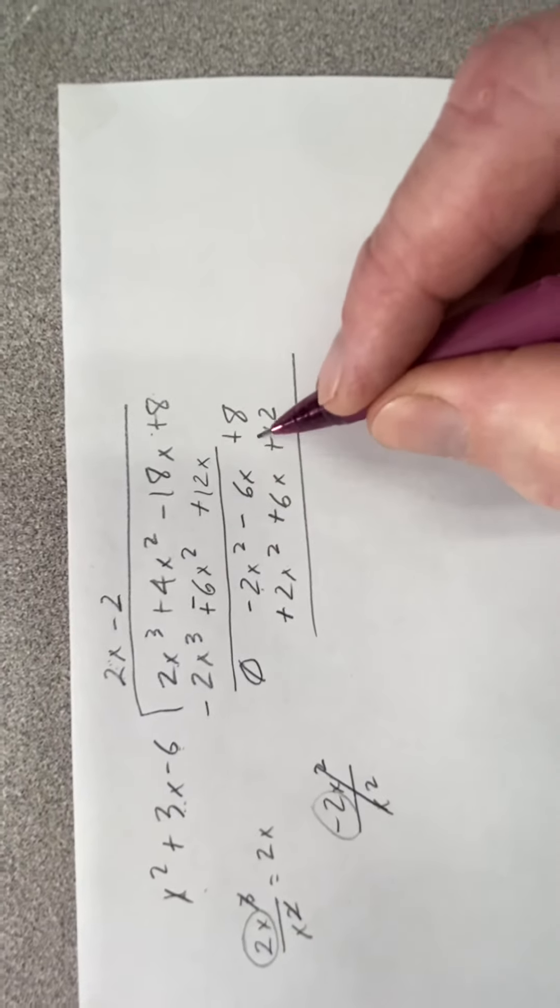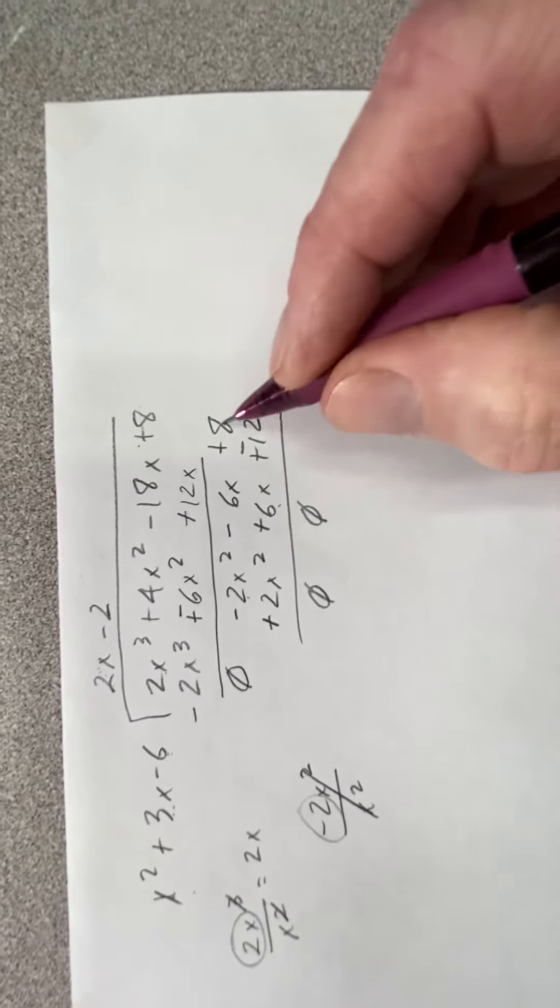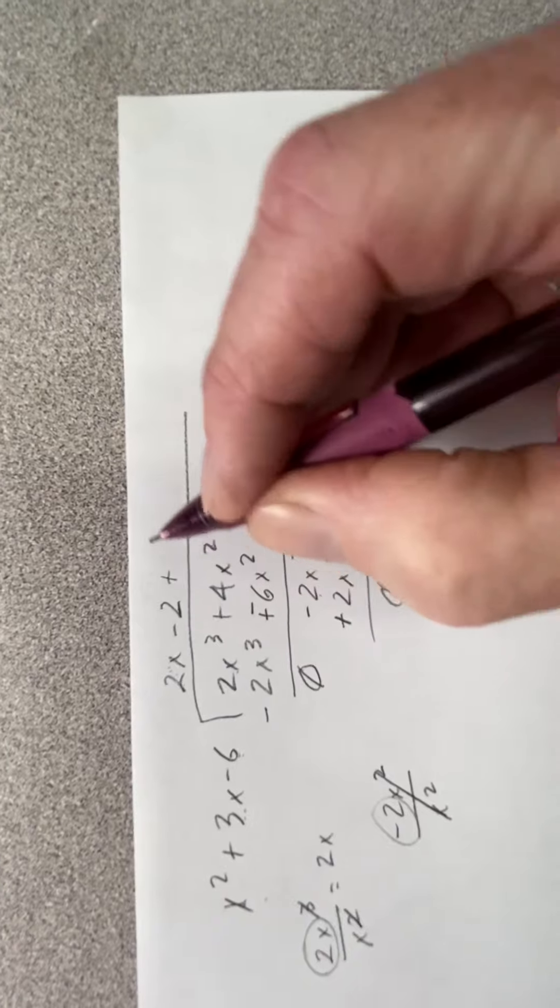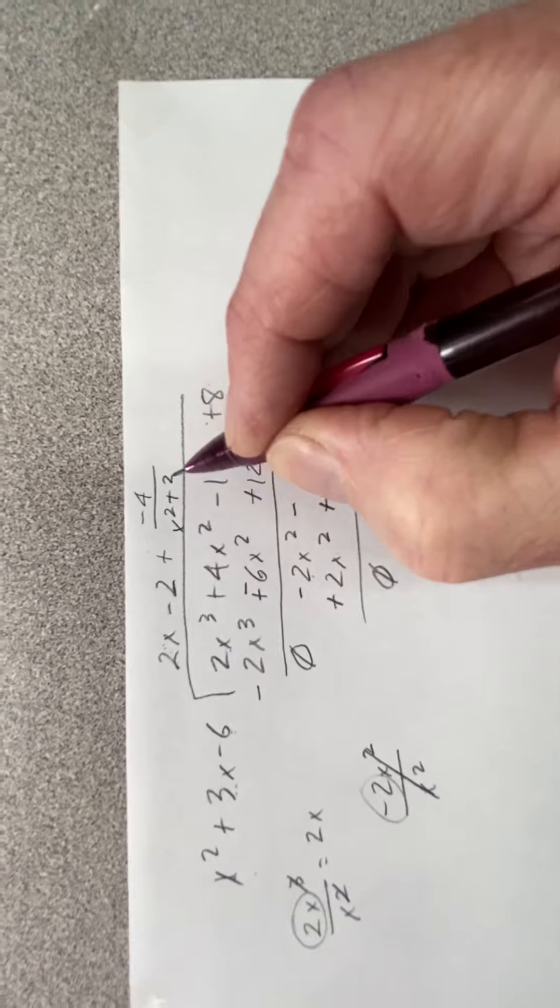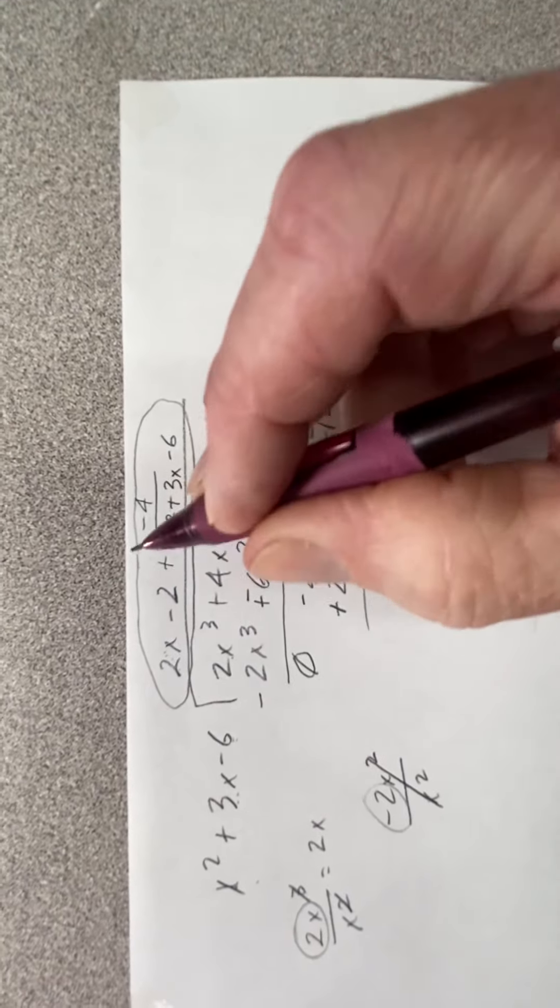I draw my line, I change my signs - leaves me 0, leaves me 0, negative 4. So that leaves me negative 4 over x squared plus 3x minus 6. And that is my answer.